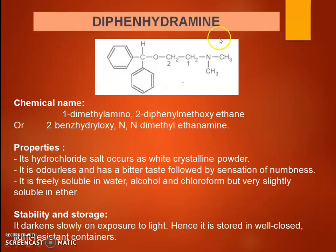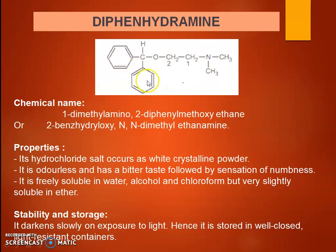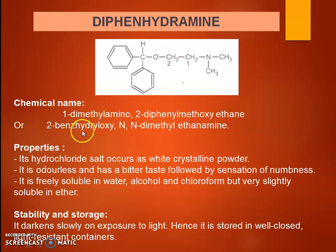Diphenhydramine: this is the structure of diphenhydramine. It contains ethane as the parent compound; at one position it has a dimethylamino group and it contains two phenyl rings attached to a methoxy group. The chemical name is 2-benzhydroxy-N,N-dimethylethanolamine.